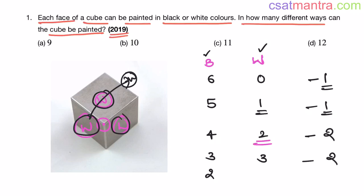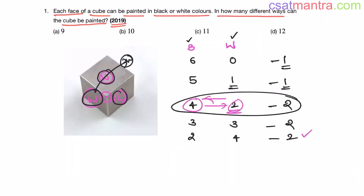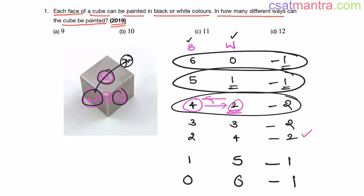Case 5: 2 faces black, 4 faces white — also 2 ways. This is the same as Case 3 by symmetry: just interchange black and white. Case 6: 1 face black, 5 faces white — 1 way, same as Case 2. Case 7: 0 faces black, all 6 faces white — 1 way, same as Case 1.